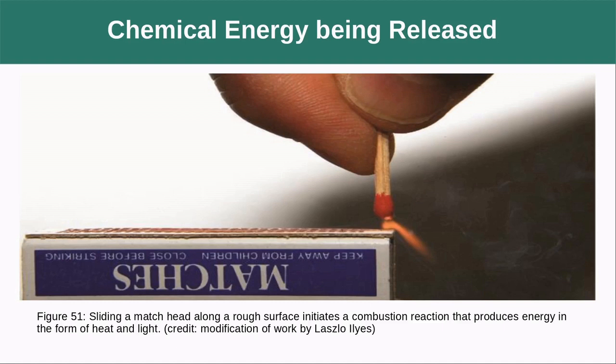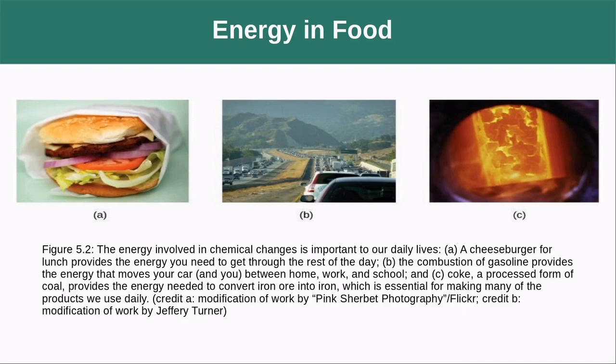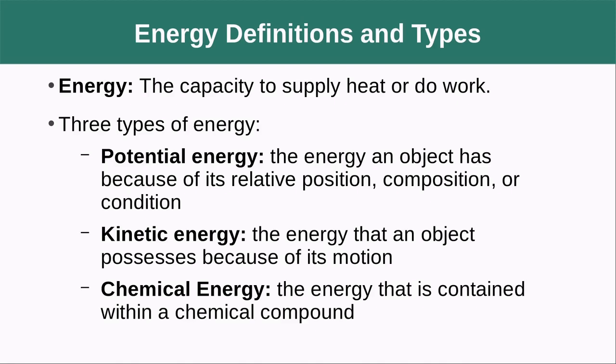An example of energy being released from a chemical state is lighting a match. You form a chemical reaction between the strip on the box and the phosphorus coating on the matchstick, and that produces a flame that releases a lot of heat. There's also the energy we get from eating food, the gasoline we burn to push our cars, and the processing of coal to create iron ore and steel.